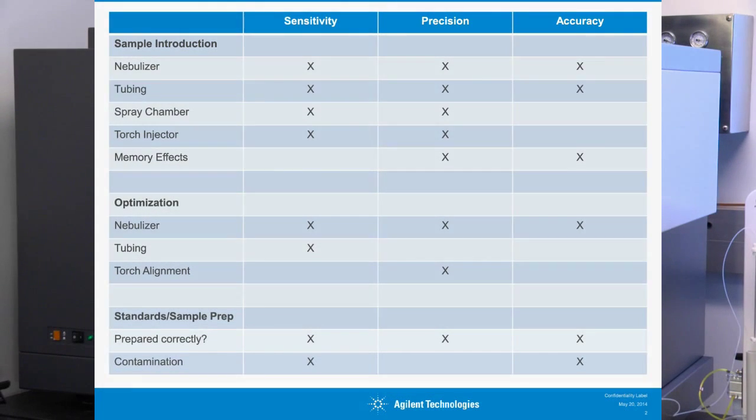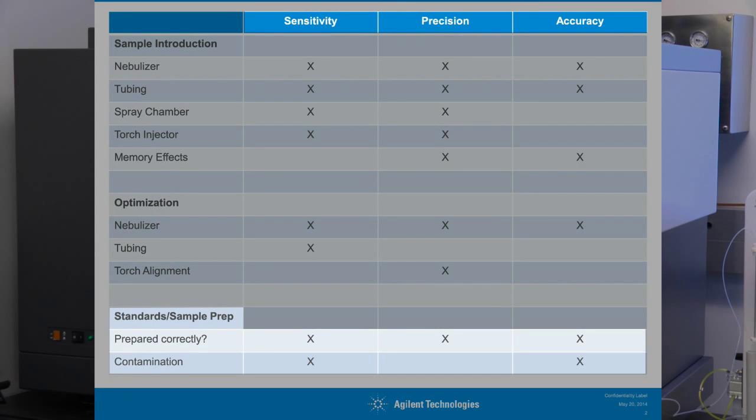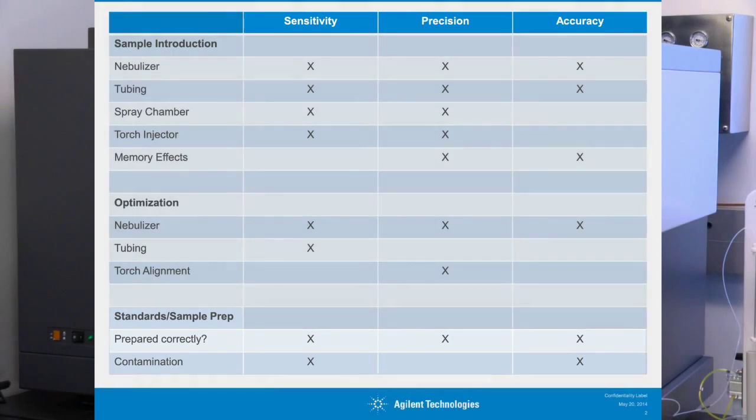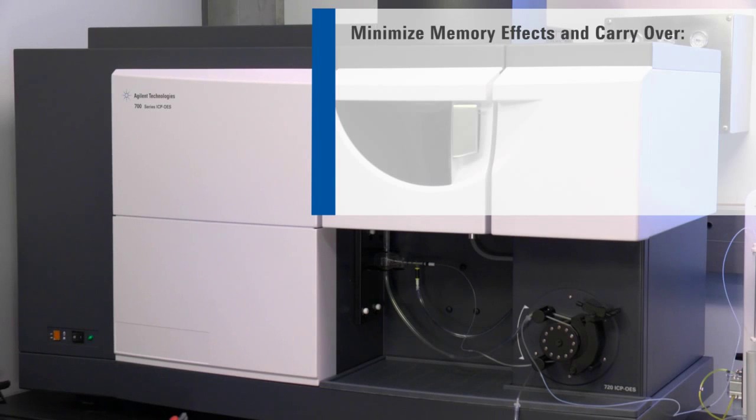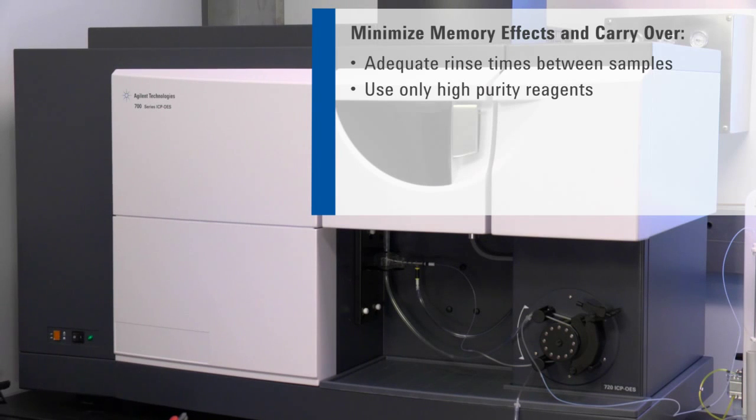The preparation of your calibration blank and standards, as well as your samples, is very important for achieving good sensitivity, accuracy, and precision. Look out for high readings for the calibration blank, which could indicate reagent contamination. Memory effects or carryover can be minimized by ensuring adequate rinse times. Use only deionized water and high purity acids, standards, internal standards, and ionization suppressants.